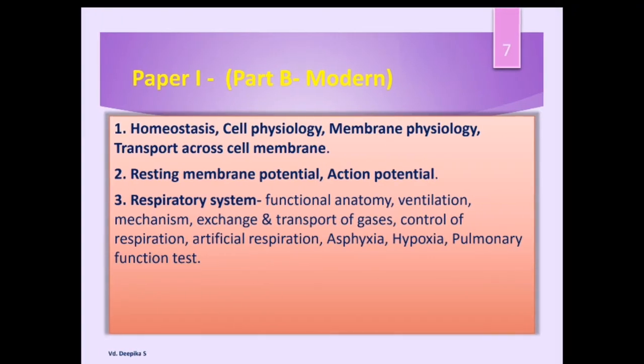Coming to Paper 1, Part B — that is the modern portion — we are going to study modern concepts like homeostasis, cell physiology, and transport across the cell membrane, including diffusion, osmosis, active transport, and passive transport. We will also deal with resting membrane potential and action potential. Next, we are going to see the respiratory system, including functional anatomy, transport of gases, control of respiration, artificial respiration, and applied aspects like asphyxia, hypoxia, and pulmonary function tests.